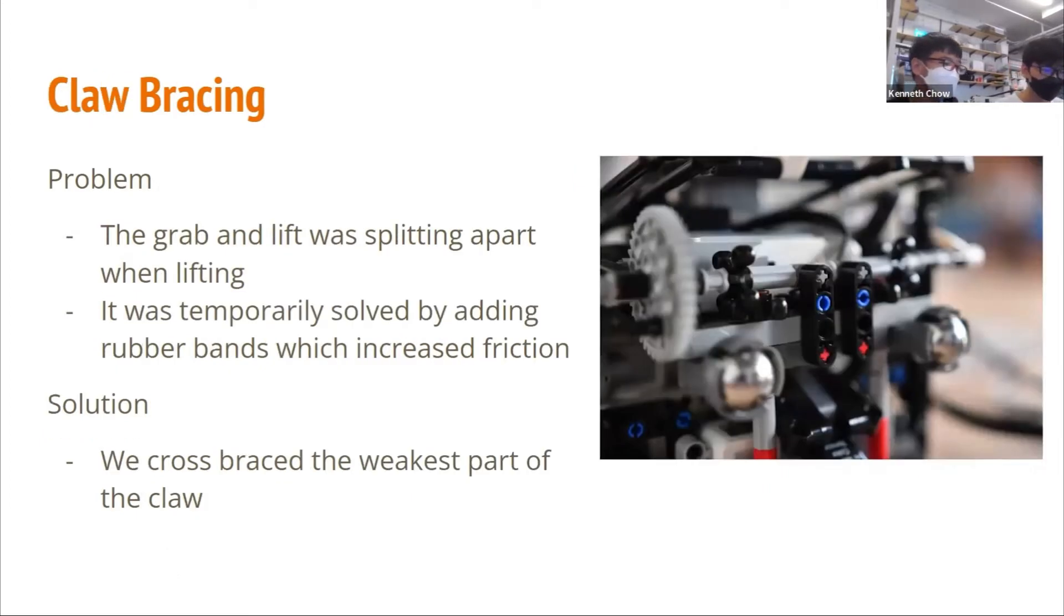One major issue with the robot last year was that the grab-and-lift gears were pulling apart when the robot was lifting the balls. Despite it being temporarily solved by adding rubber bands, it was not a permanent solution as it increased friction, making it less reliable. We needed a better solution. Hence, we cross-braced the weakest part of the claw, ensuring that the gears always remained in contact when the mechanism was rotated. This should be a lot more reliable.